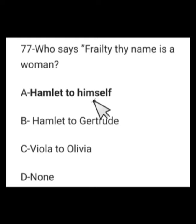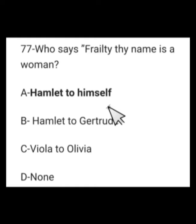Number 25: Who says 'Frailty, thy name is woman'? Options: Hamlet to himself, Hamlet to Gertrude, Viola to Olivia, or none. This was said by Hamlet to himself — it was his first soliloquy in Act 1, Scene 2. There are eight or nine soliloquies in Hamlet. Soliloquies mean talking to one's own self.